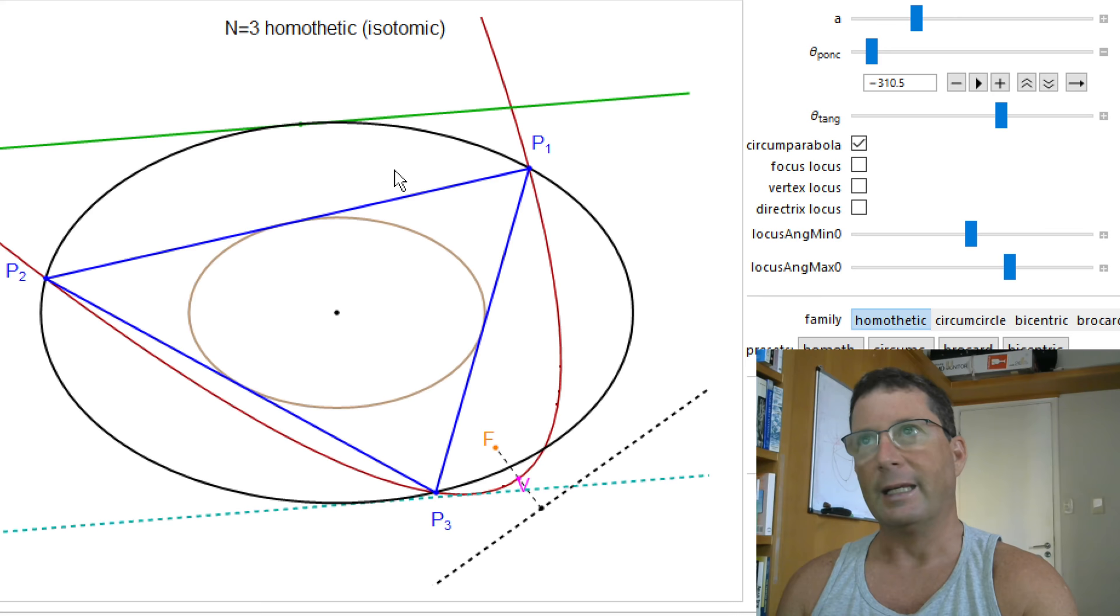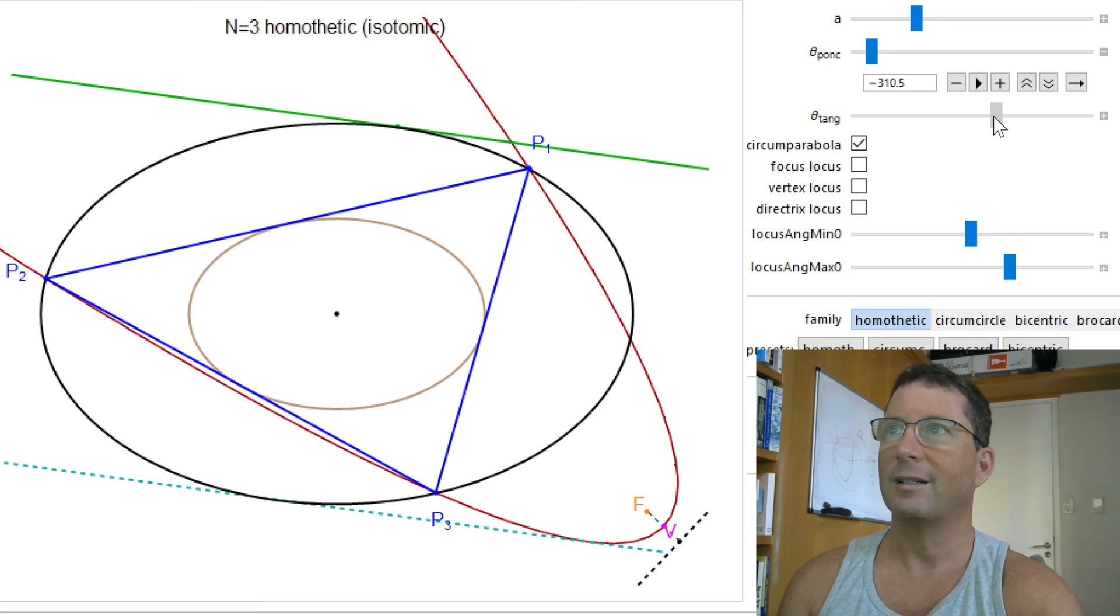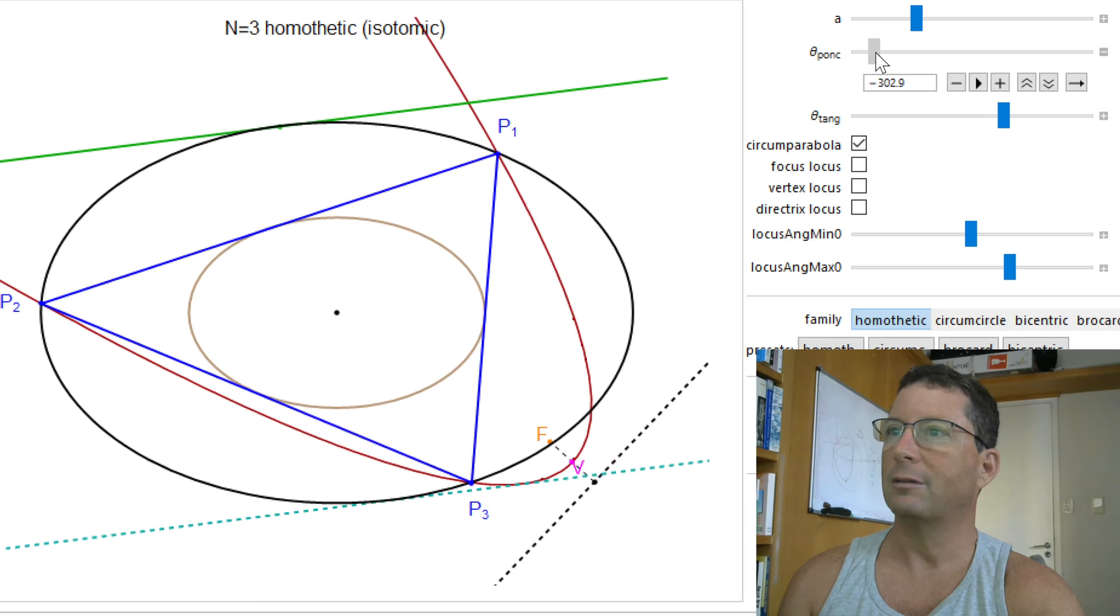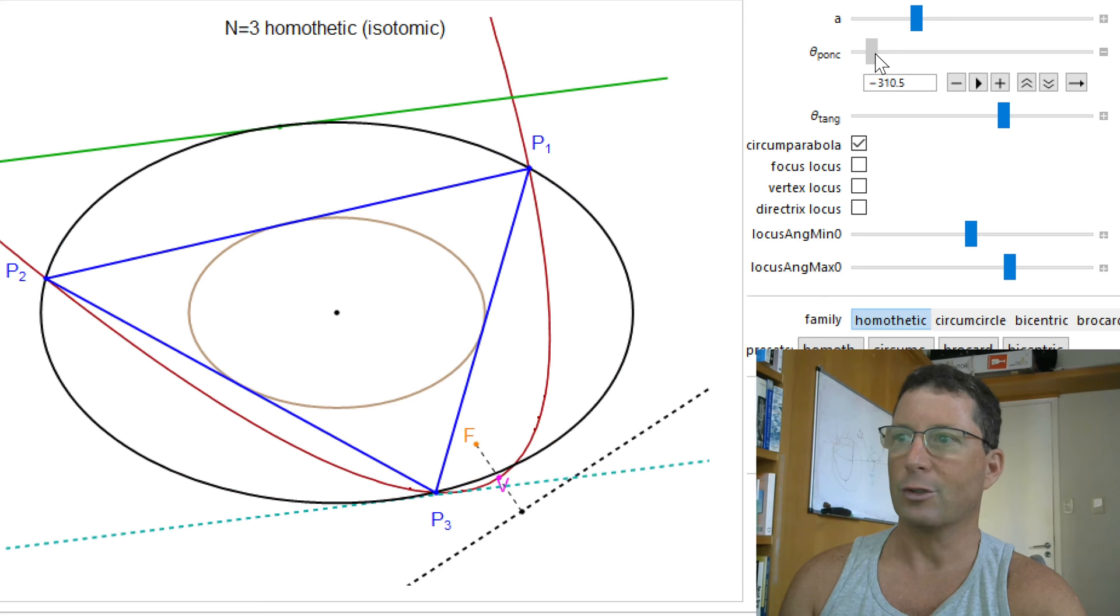is the envelope of the directrix, either over a motion of this tangent or jogging the actual Poncelet family. What is this envelope? Is it an interesting curve or not? So this is to be explored.